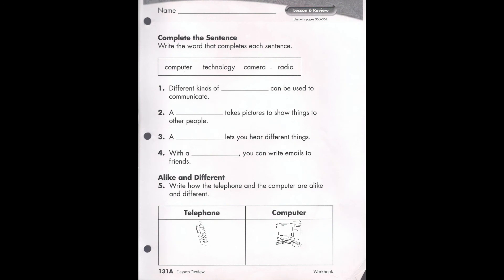Now we're going to be on this page. If you don't have it printed out, just write the numbers 1, 2, 3, and 4. All you have to do is write down the missing word from the blank — you don't have to write the full sentences, just write the word that fits in each sentence. At the top of our word bank we have the words: computer, technology, camera, and radio.